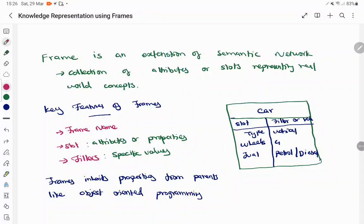It works like object-oriented programming. Each frame has three important entities: one is the name given for a frame, the slots which are the attributes or properties, and fillers which are the values substituted for each attribute.